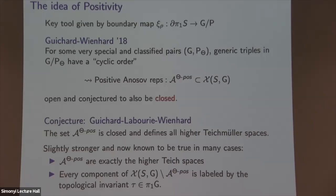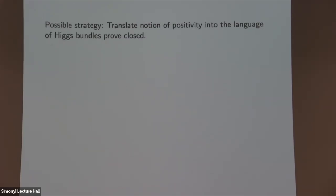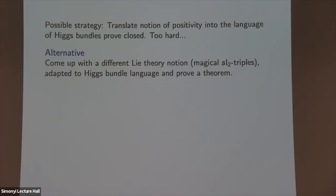Can we prove this conjecture using Higgs bundles? A possible strategy is to translate positivity into the language of Higgs bundles, where the moduli space has more tools, and use those tools to prove these sets are closed. This turns out to be hard — bringing positivity over to Higgs bundles requires solving a PDE, and we know a solution exists but not what the solution is. So instead, we came up with a different Lie-theoretic notion: magical SL₂ triples. This is a Lie-theoretic notion adapted to the language of Higgs bundles.